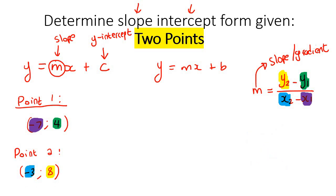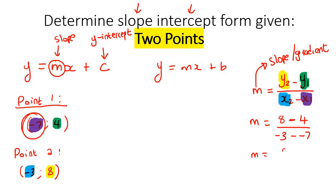So let's go fill in the values. We're going to go m equals, now we fill in the eight, then put a minus, then the y-value of point number one which is four. Then the x-value of point number two, then a minus, and then this one is also a minus — just put it there like that. You could type that on the calculator exactly like that, or fix it up first. We end up with four at the top, four at the bottom, which is one. So we now have our slope.